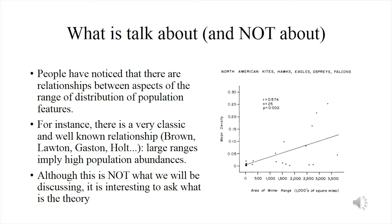For some time people have noticed that there are features of distributions that seem to be related to niche ideas. For instance, there is this very classic relationship discussed by people like Jim Brown, John Lawton, Kevin Gaston, and Bob Holt: that there is a relationship between the size of a distribution — how wide or how big the distribution is — and the population abundance. To your right you see an example where range size is on the x-axis and population density on the y-axis, and you see that there is some sort of positive relationship.